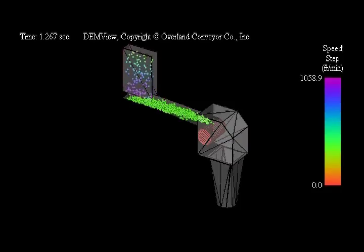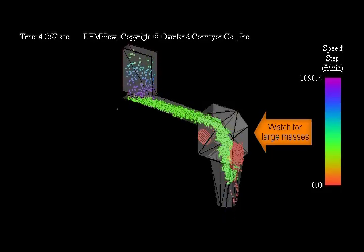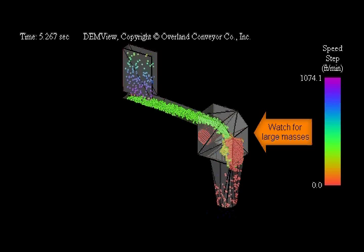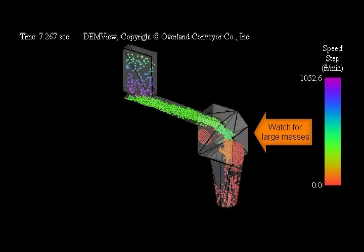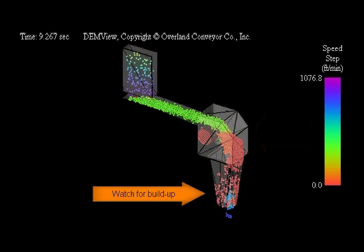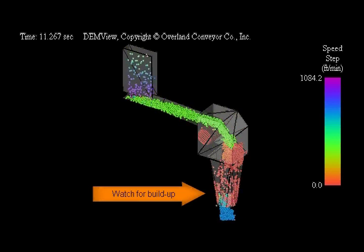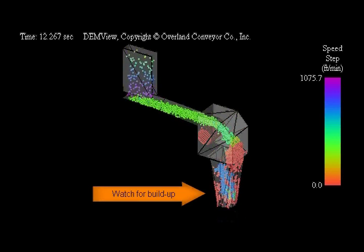In this example, you can see that we're using sticky materials. Watch for a build-up of large masses at the output of the belt, but also watch for a build-up of particles at the outlet of the chute.